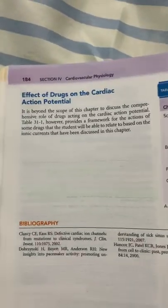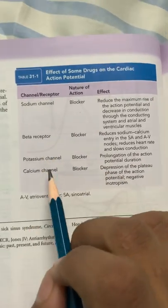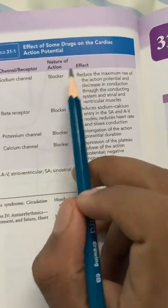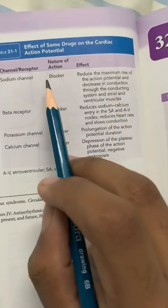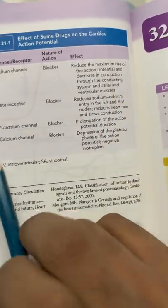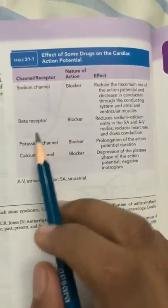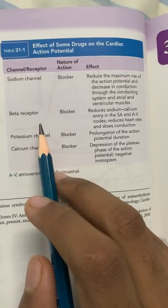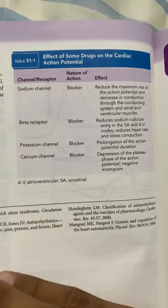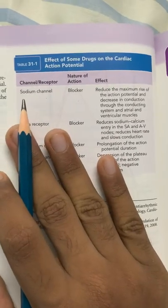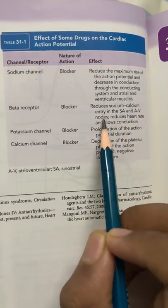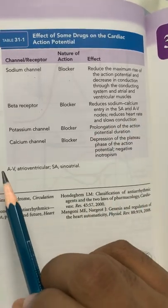Effect of drugs on the cardiac action potential: sodium channel blockers reduce the fast rise of the action potential, decreasing the maximum rate of depolarization and conduction through the conducting system. Beta-1 adrenergic receptor blockers — which block receptors activated by noradrenaline — reduce sodium and calcium entry in the SA and AV nodes, reducing heart rate and slowing conduction.